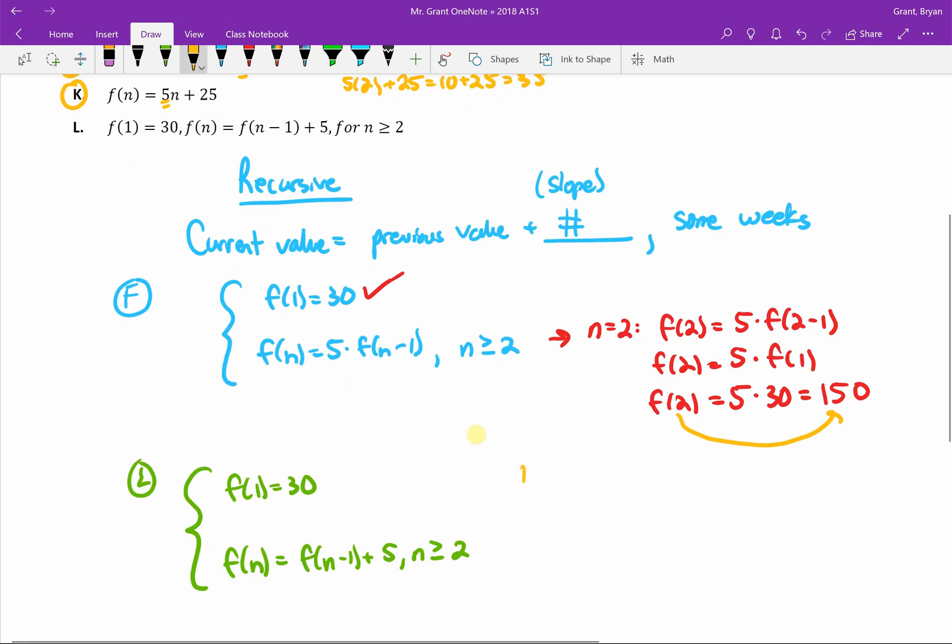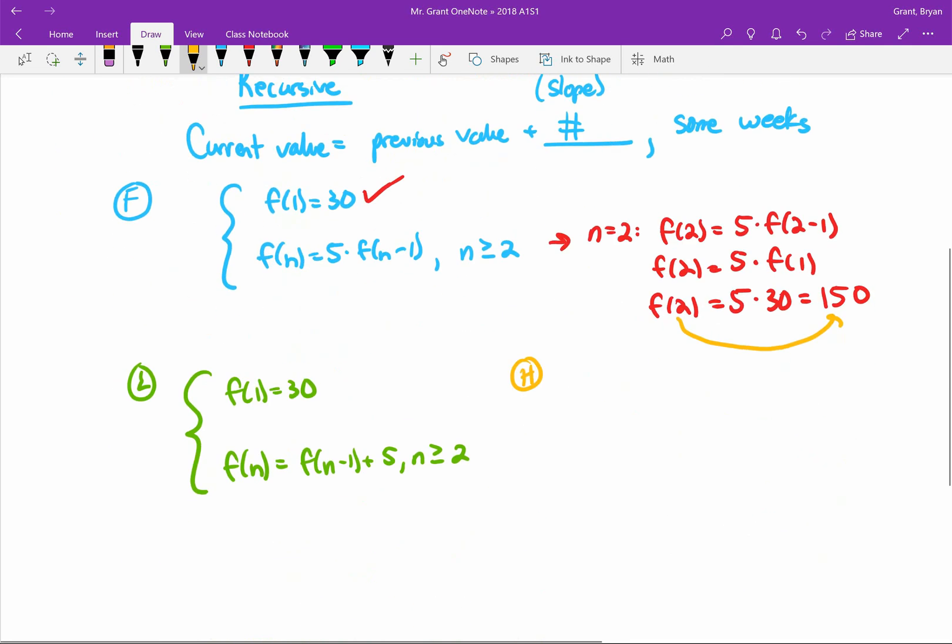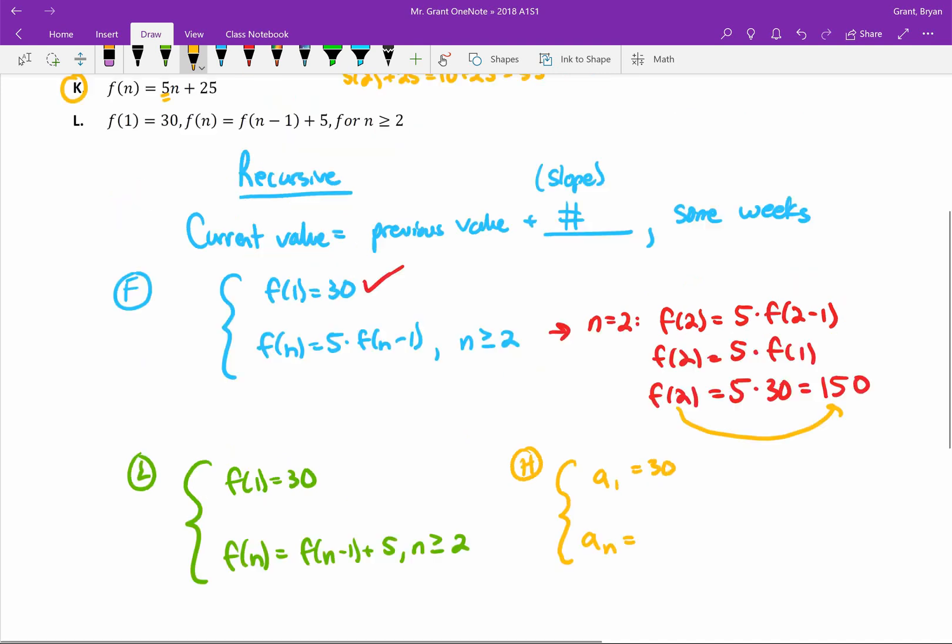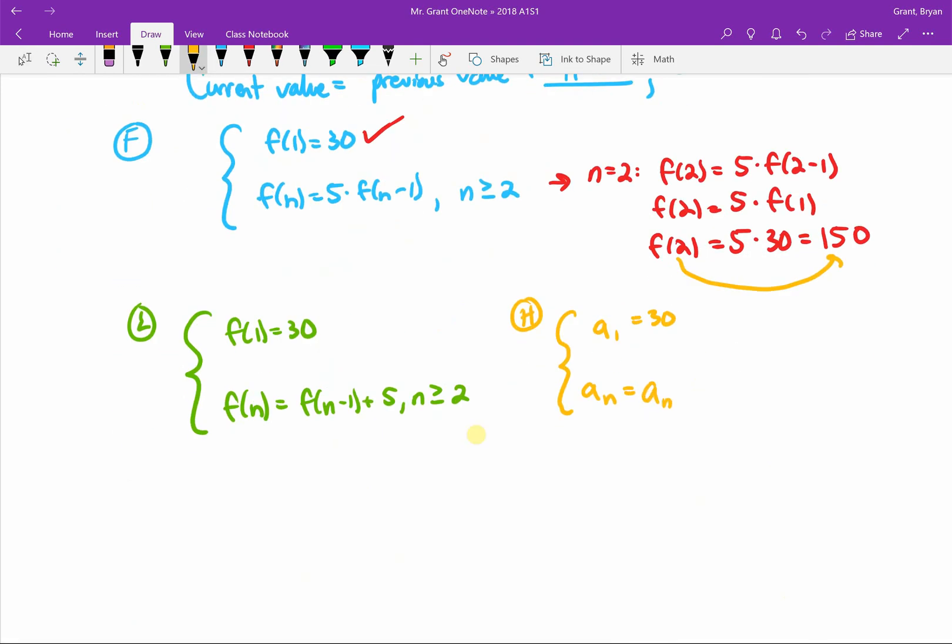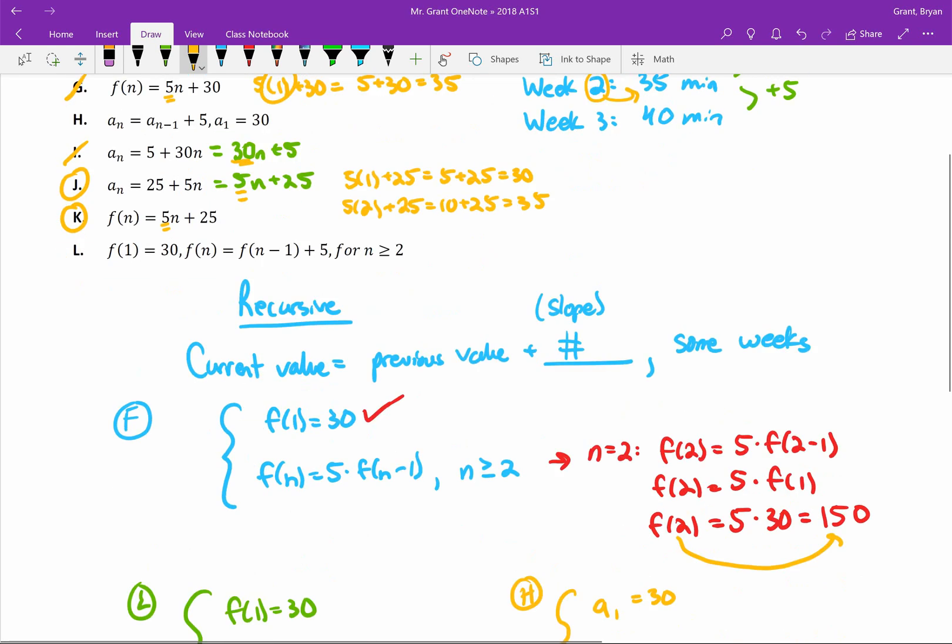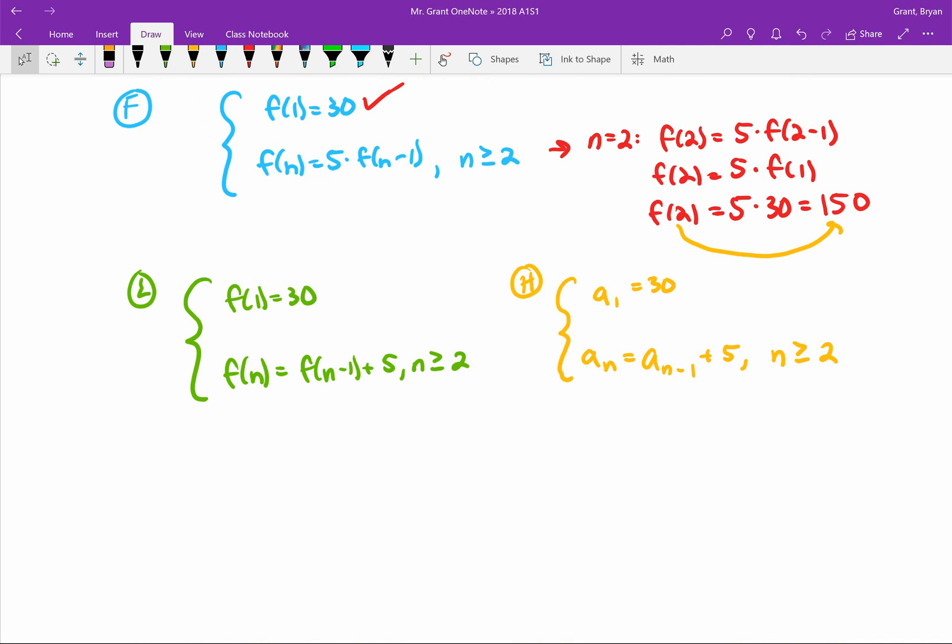For L, they gave us F(1) = 30, which is good. Then they told us that F(N) = F(N-1) + 5, and that's only good for N ≥ 2. Then if we wanted to look at H, they tell us that A sub 1 is 30. And to find A sub N, you need to do A sub N-1 + 5. These are actually saying the exact same thing. In the first week, we did 30 minutes of exercise. To find the amount of exercise we did, take the amount we did last week and add 5 to it.